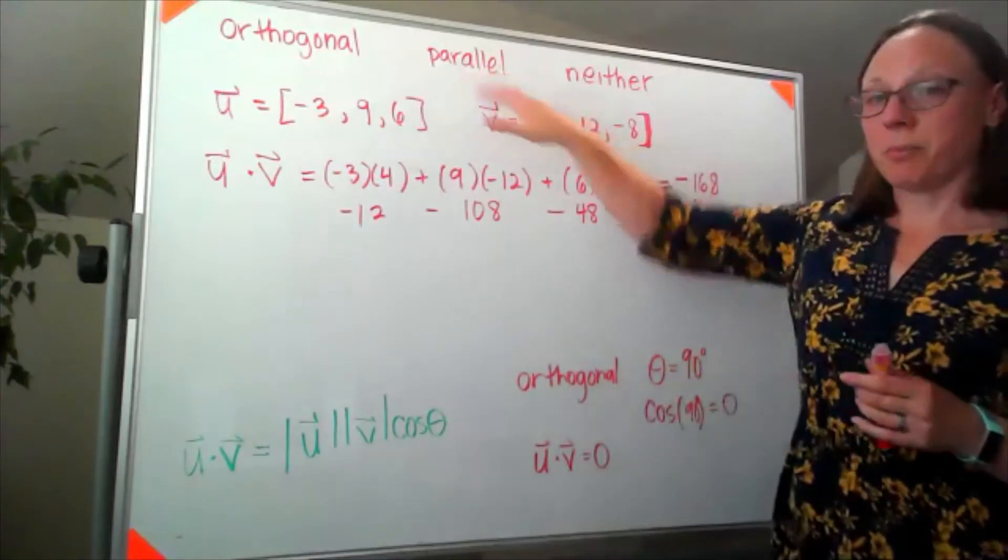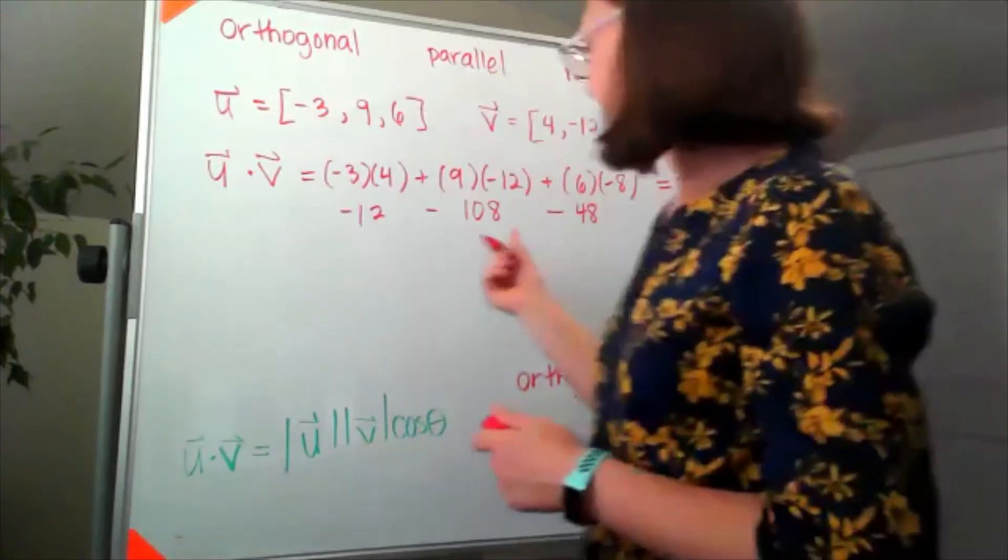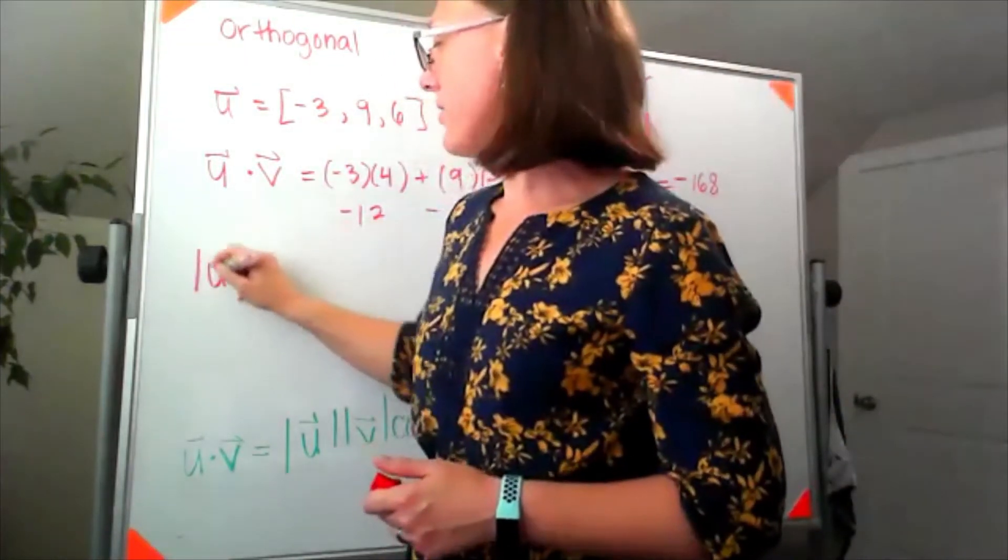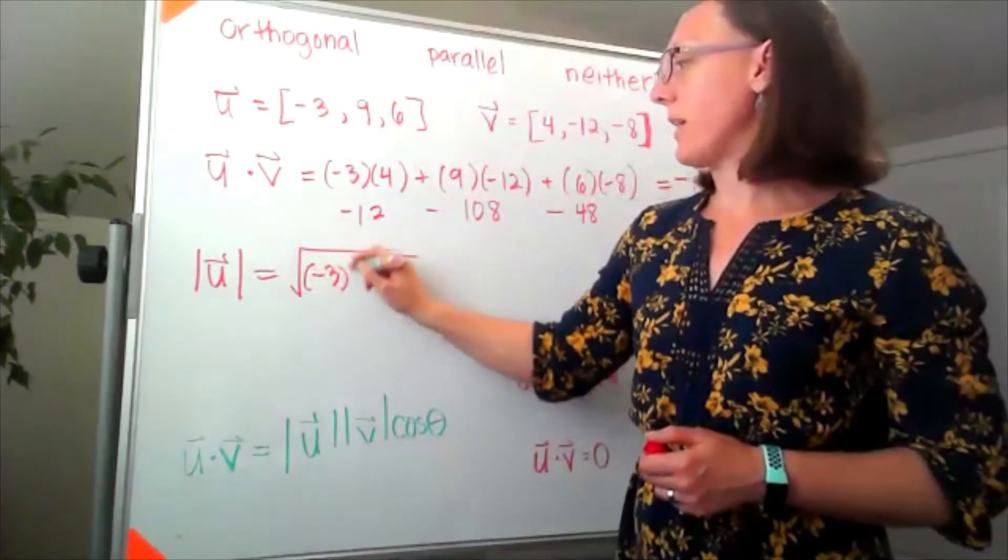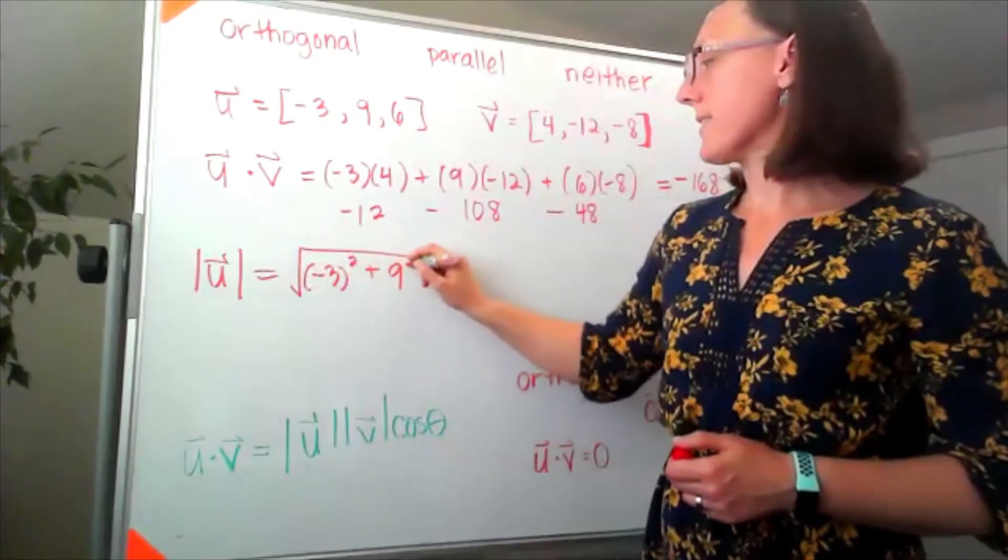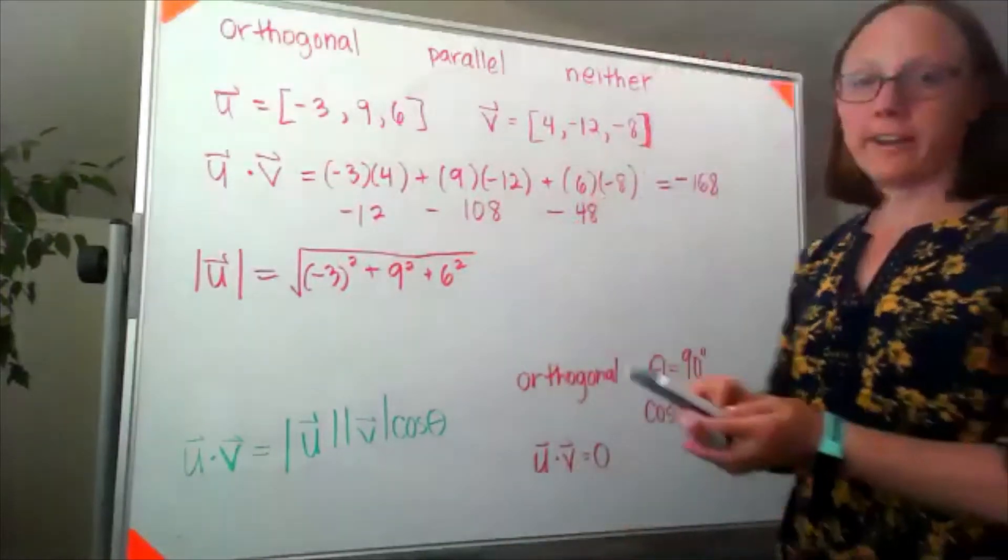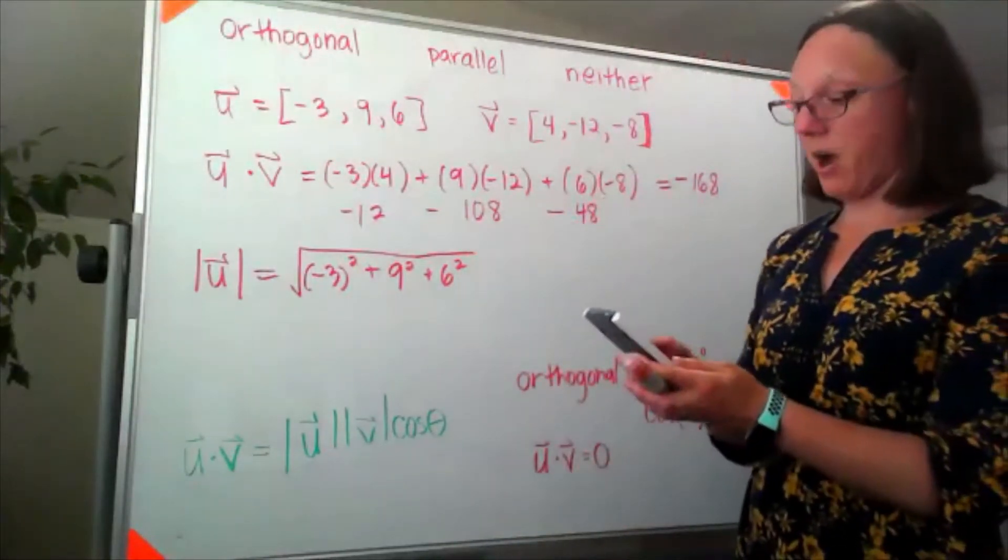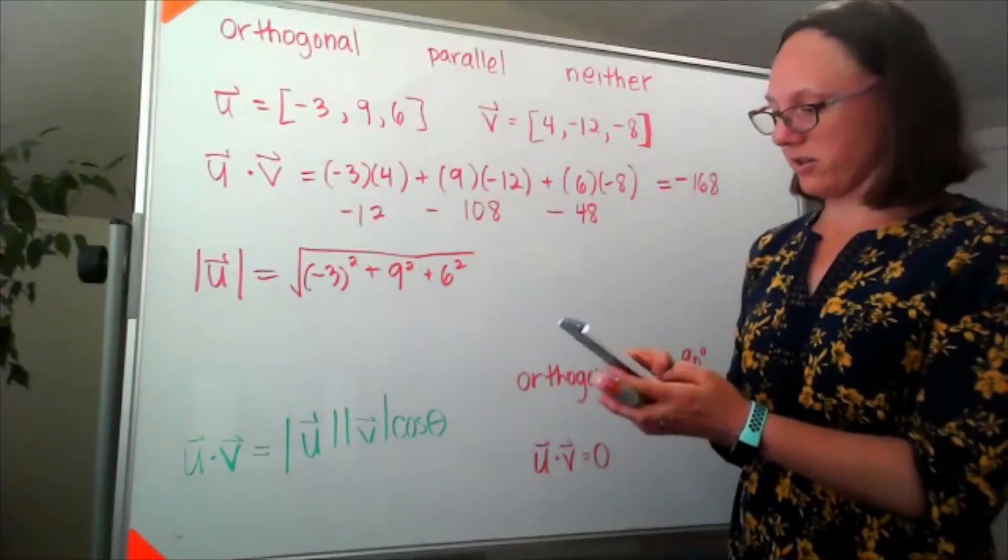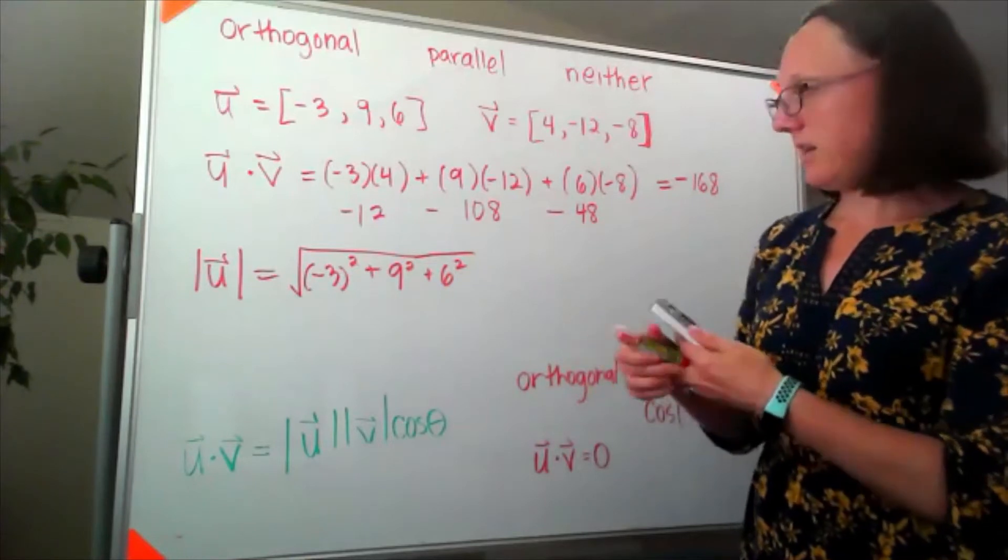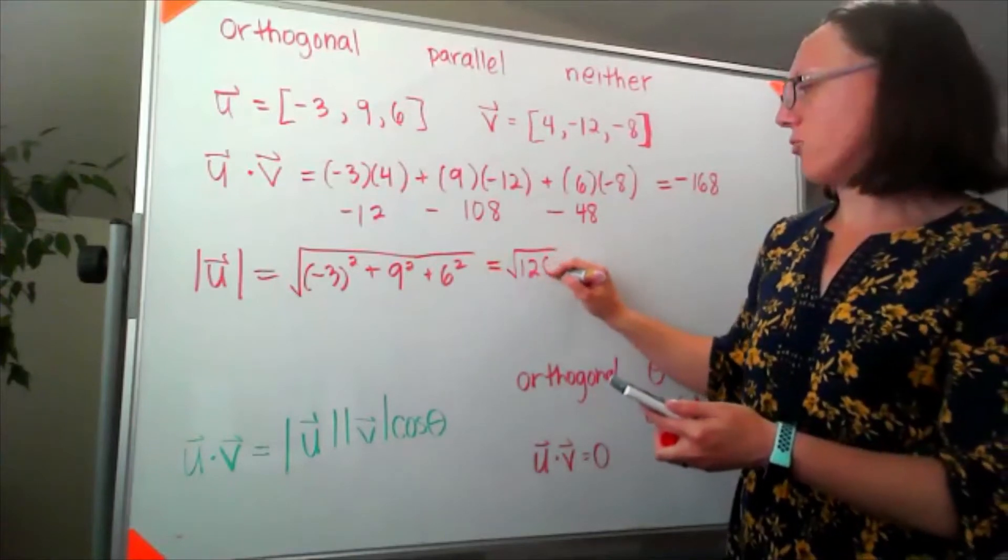To figure out if they're parallel I now need to look at the magnitudes of our vectors. So the magnitude of u is going to come down to the square root of negative 3 squared plus 9 squared plus 6 squared. And while I'm sure I could do that by hand I'm not going to. I'm going to take 9 plus 81 plus 36. I'll say that is the square root of 126.